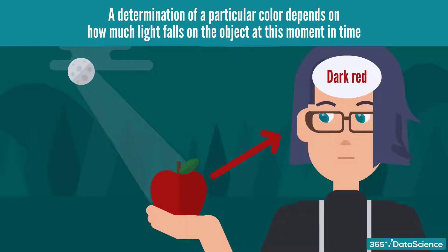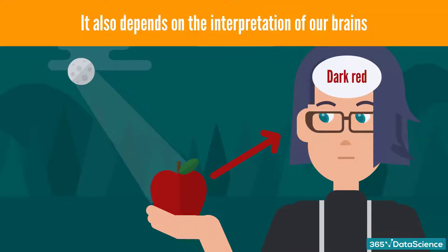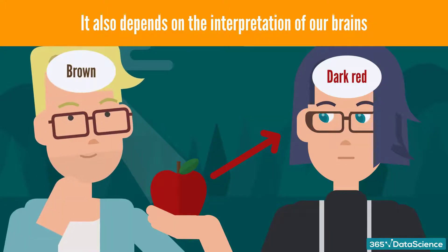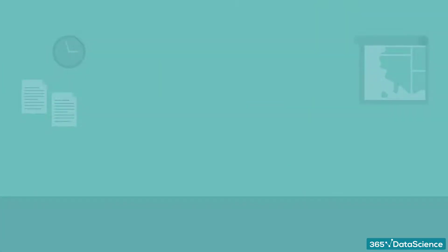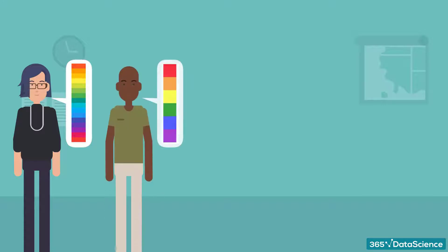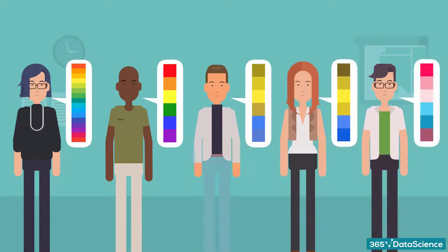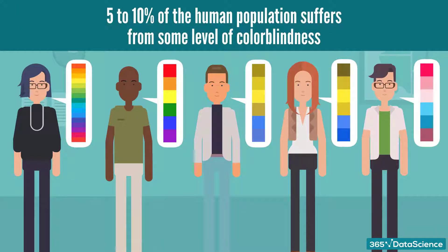But perhaps more interestingly, it also depends on the interpretation of our brains, which can differ widely from one person to another. As you are probably aware, some people see a greater spectrum of colors compared to others. Then there are also colorblind people who have a more limited perception of color. Five to ten percent of the human population suffers from some level of color blindness. Therefore, it is extremely important to keep that in mind when talking about data visualization.